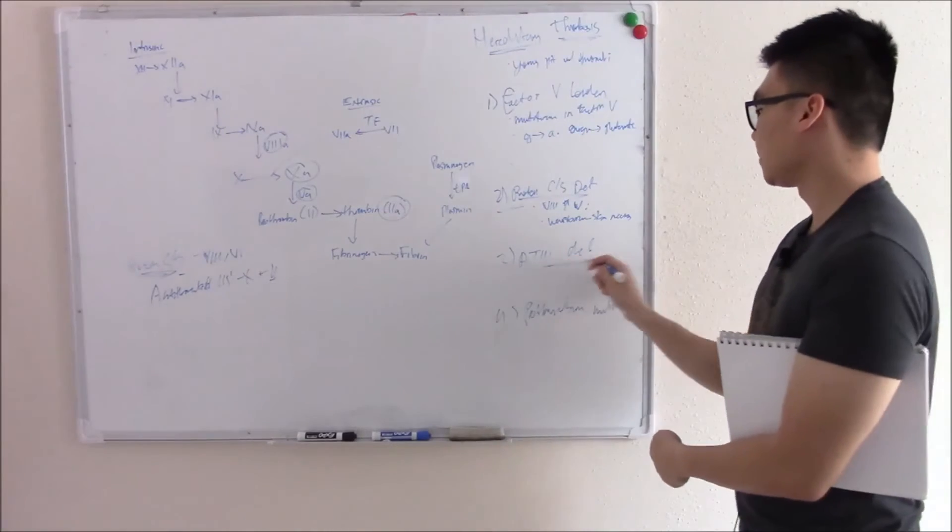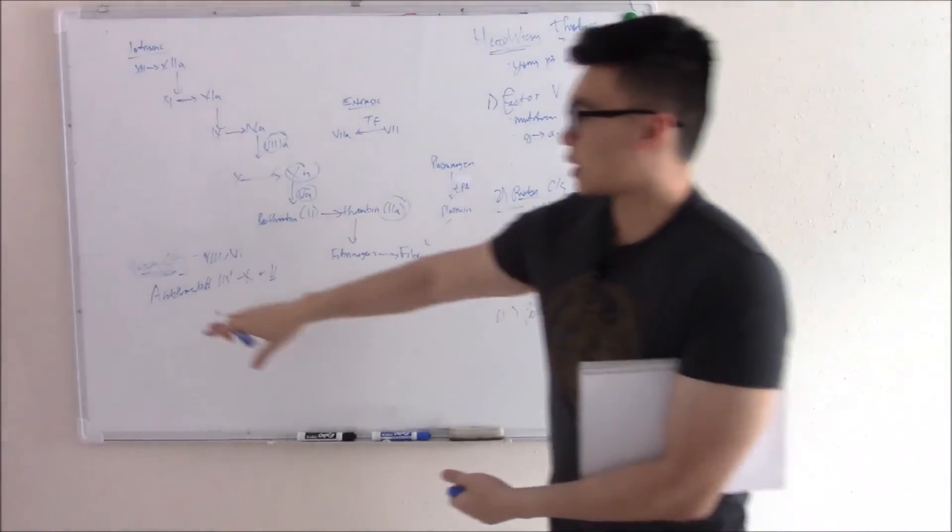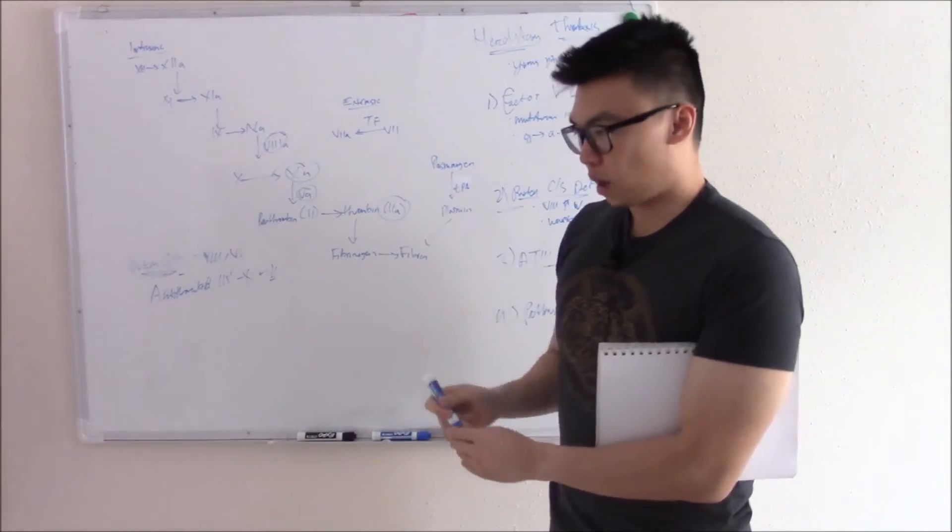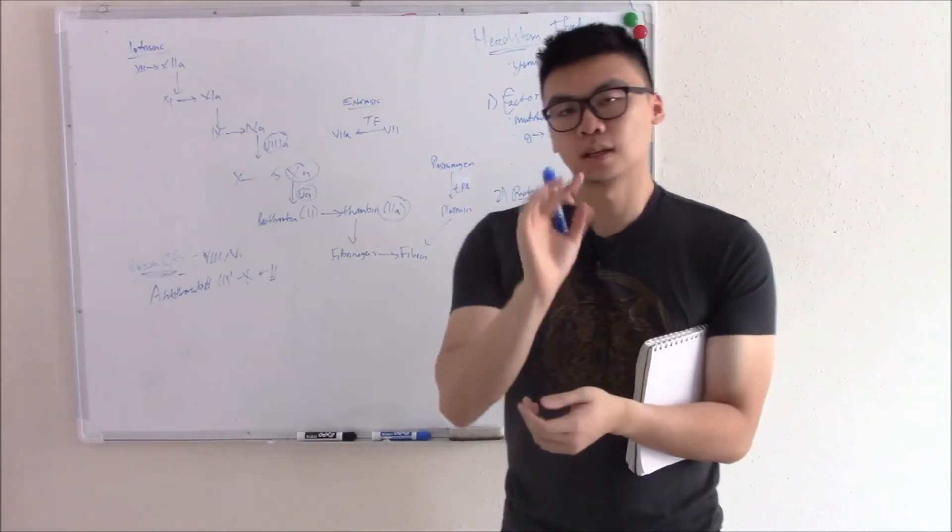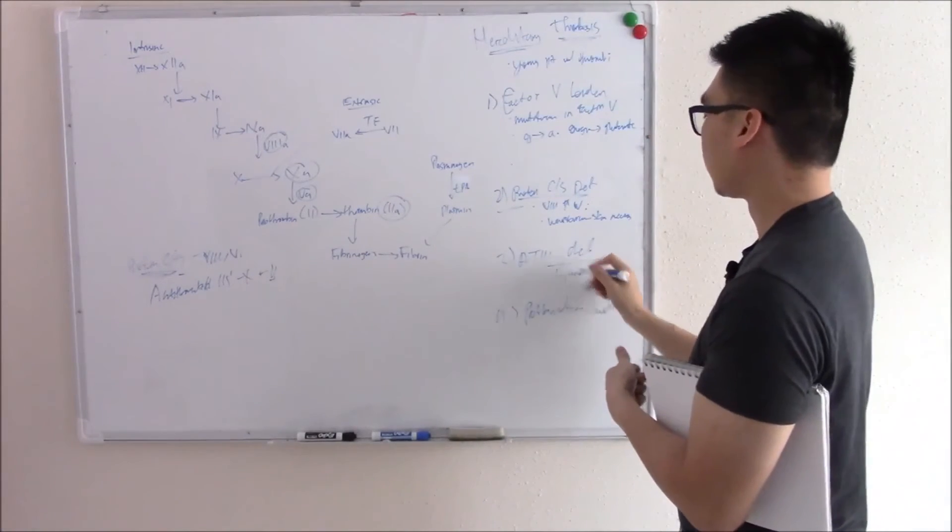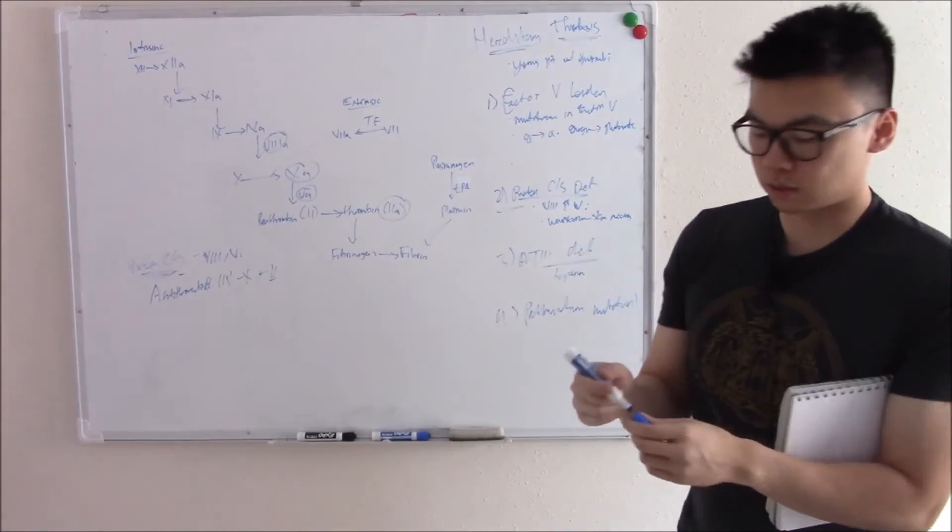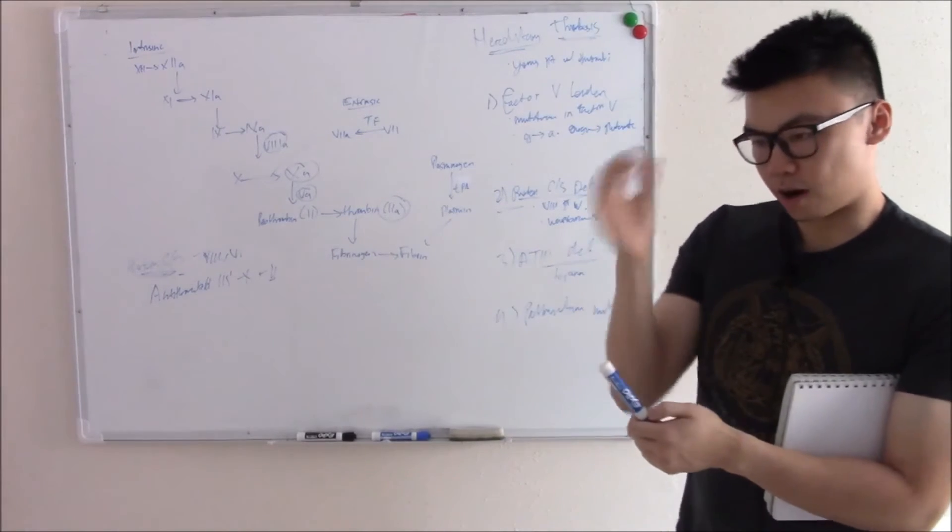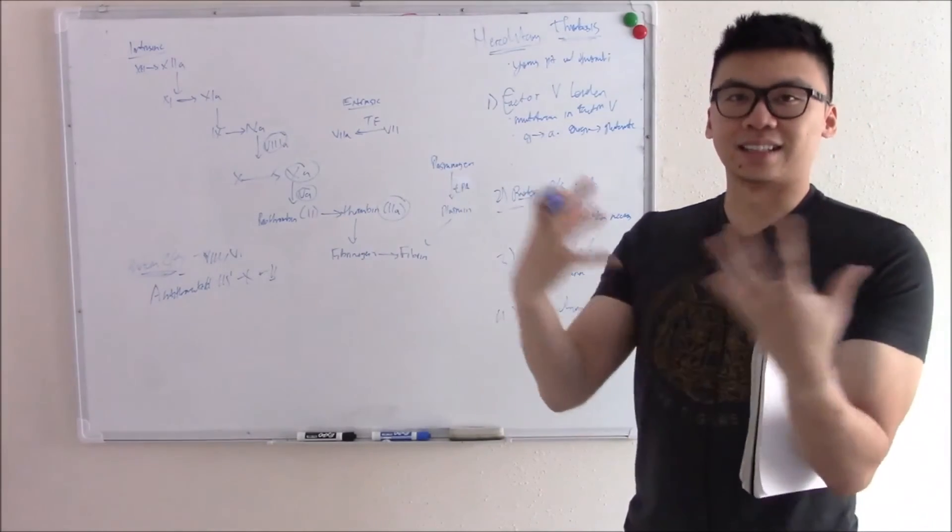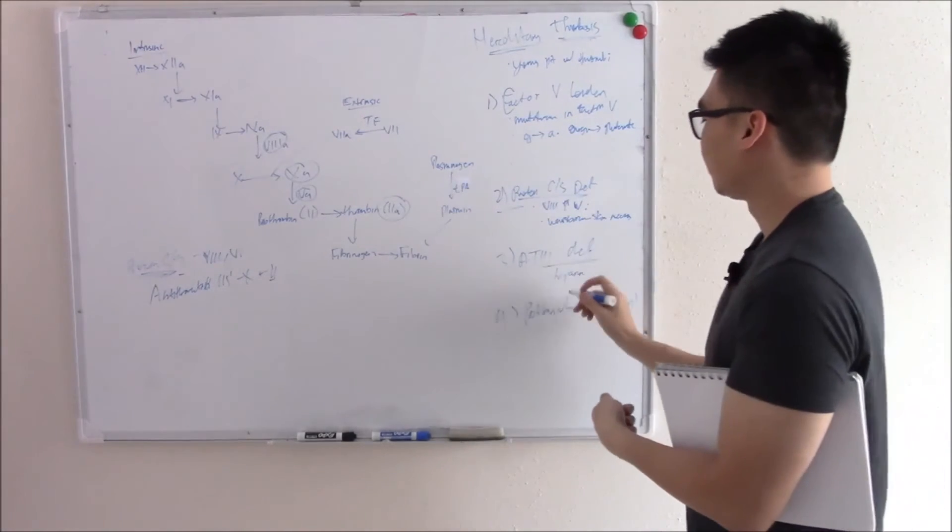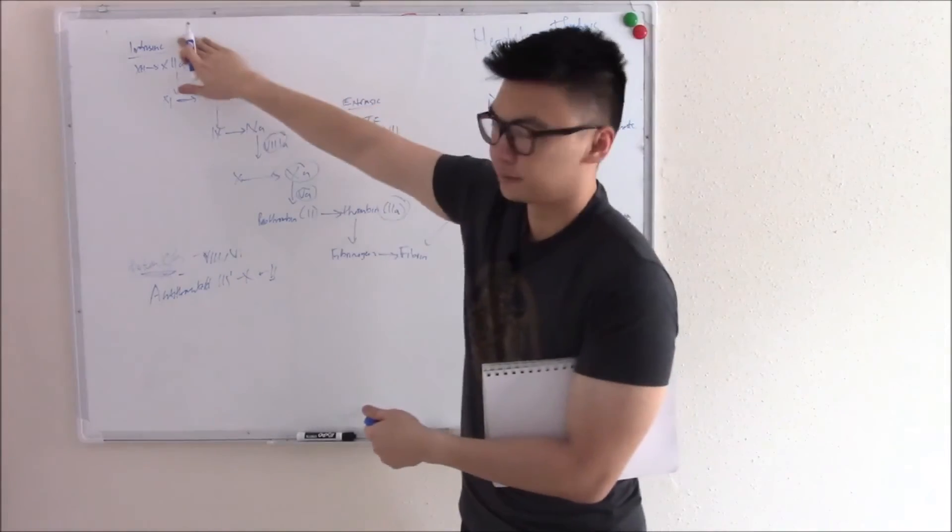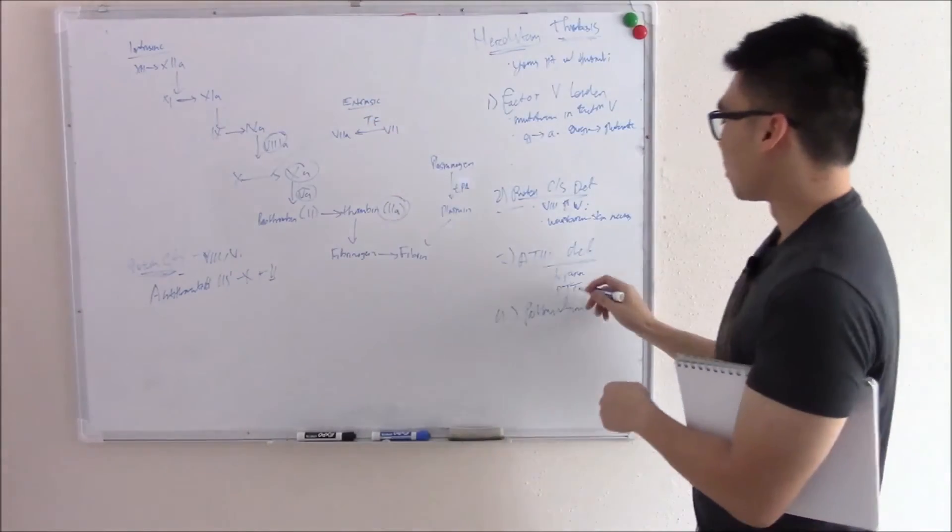Antithrombin 3 deficiency. You don't have antithrombin 3. You can't work on many factors, but in particular 2 and 10. What drug works on antithrombin 3? That'd be your heparin. Heparin works on it. So if you're deficient in antithrombin 3 and heparin won't work as well. And so you'll give heparin and you'll monitor heparin use. What tests do we use to monitor heparin use? Hopefully everything's coming back. This is like a nice recap video. That'd be your PTT. Your intrinsic pathway.